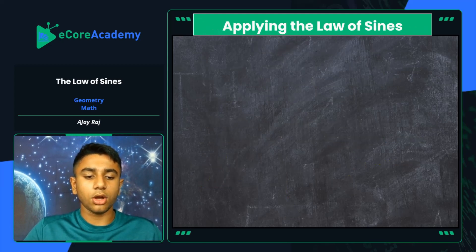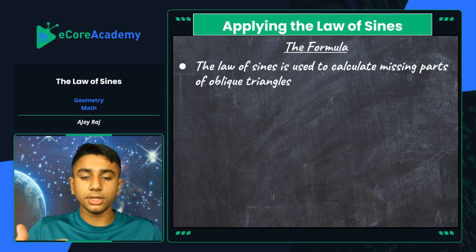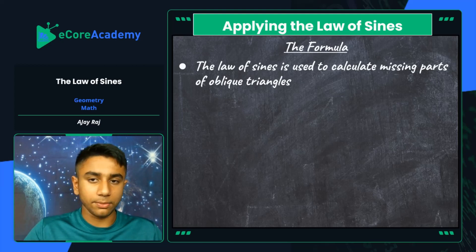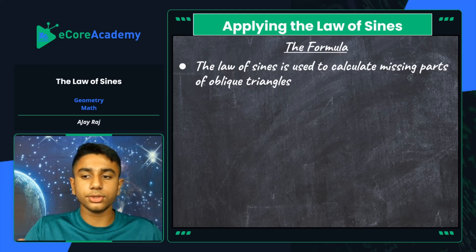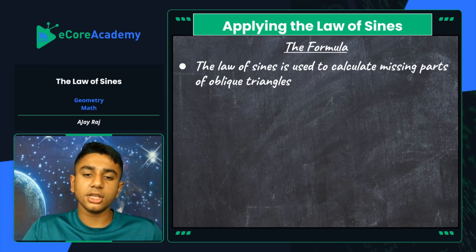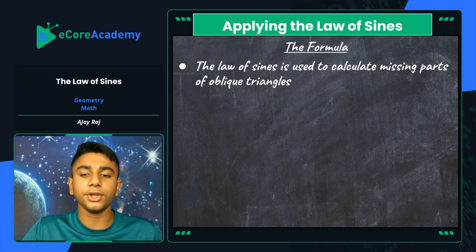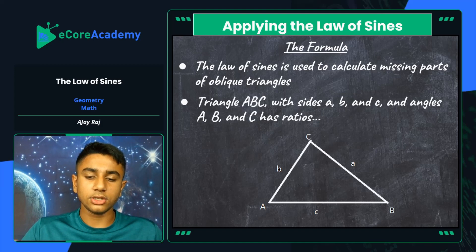Let's look at applying the Law of Sines and the formula to solve specified problems. The Law of Sines is used to calculate missing parts of oblique triangles — the same goal as with right triangles, where you use angles and their correlations to discover missing side lengths. In this case, we utilize extensive ratios between sines of multiple angles and sides within a given triangle. Triangle ABC with sides a, b, and c and angles A, B, and C has consistent ratios.